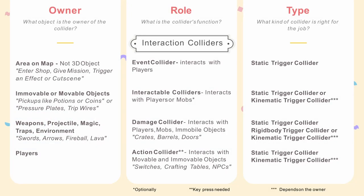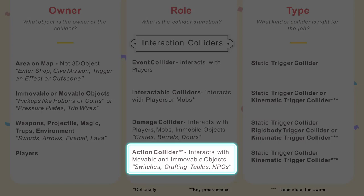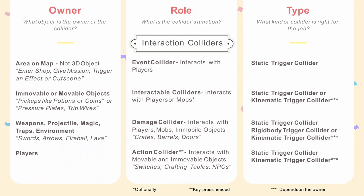The type depends on the owner. The action collider is part of the player. It can interact with both movable or immovable objects like switches, crafting tables, or even NPCs. They need activation by pressing a specific key on the keyboard or the controller.